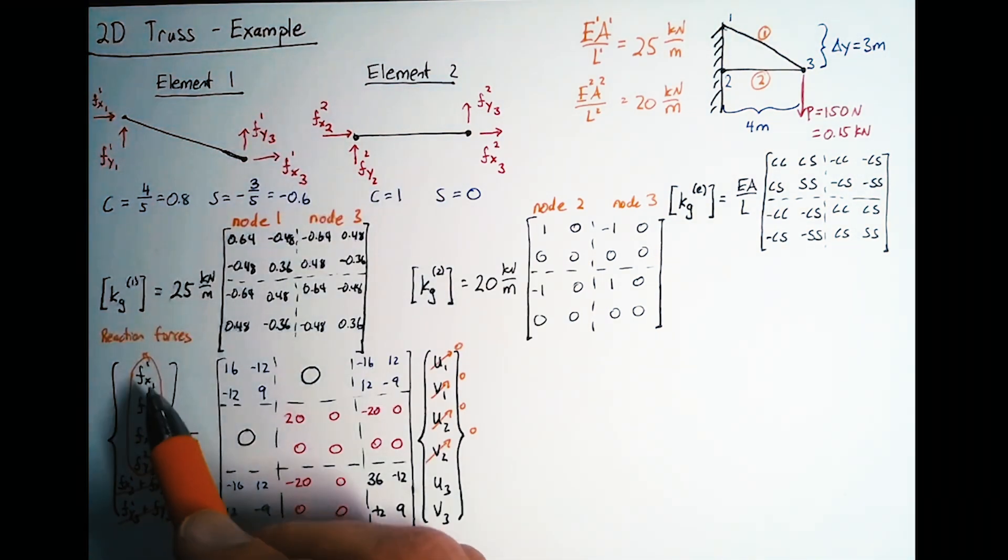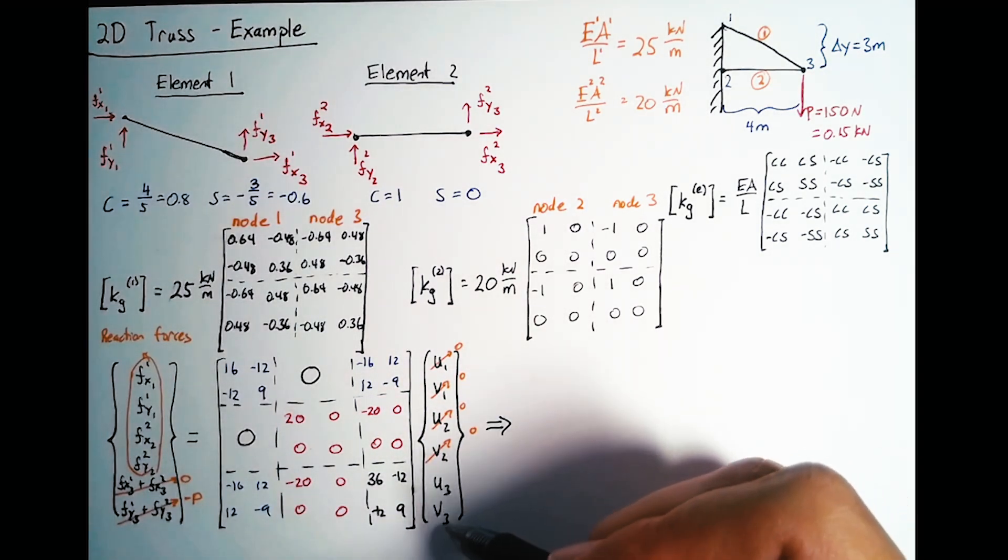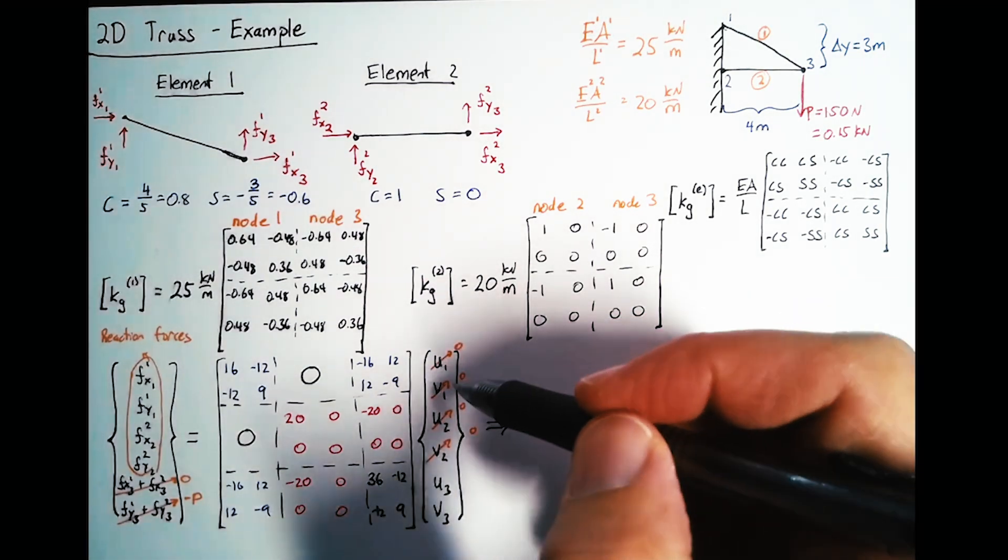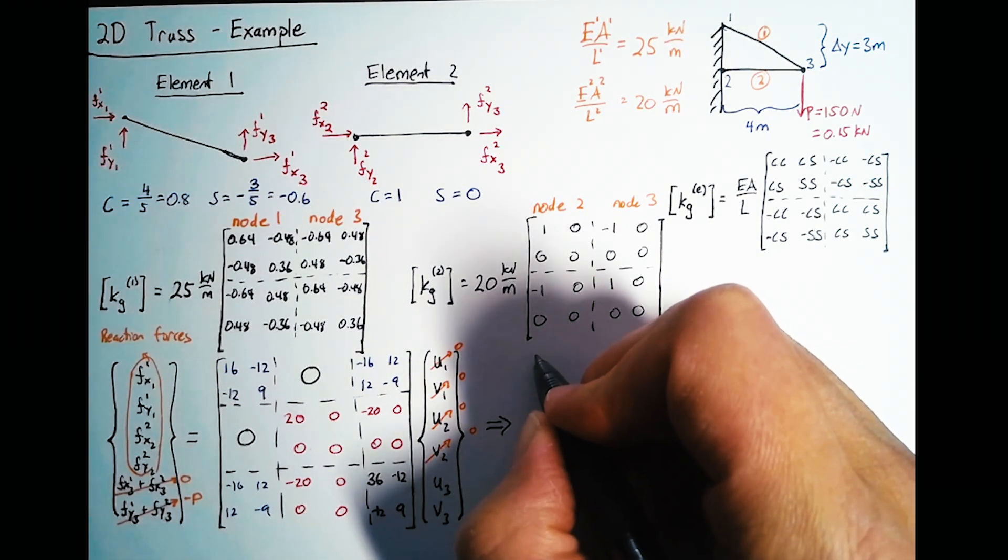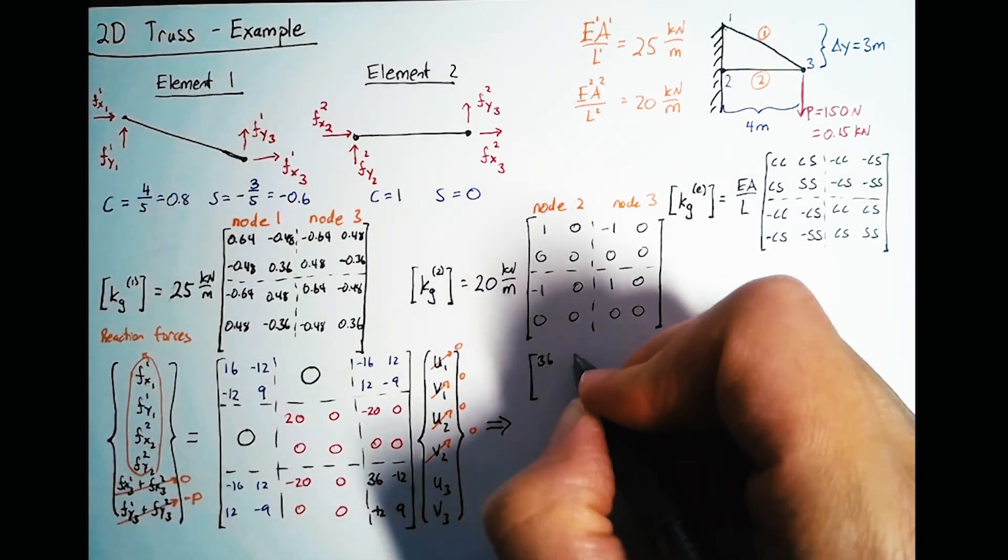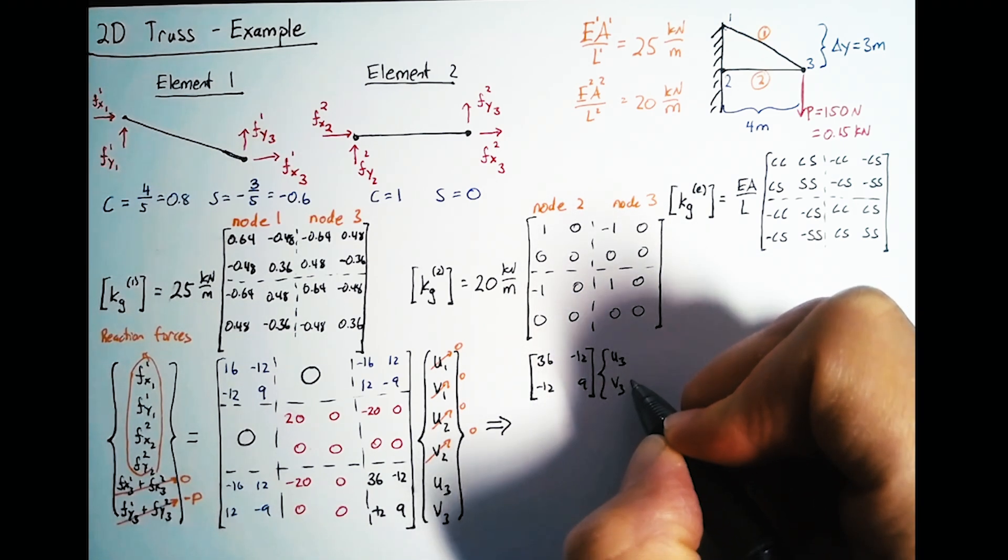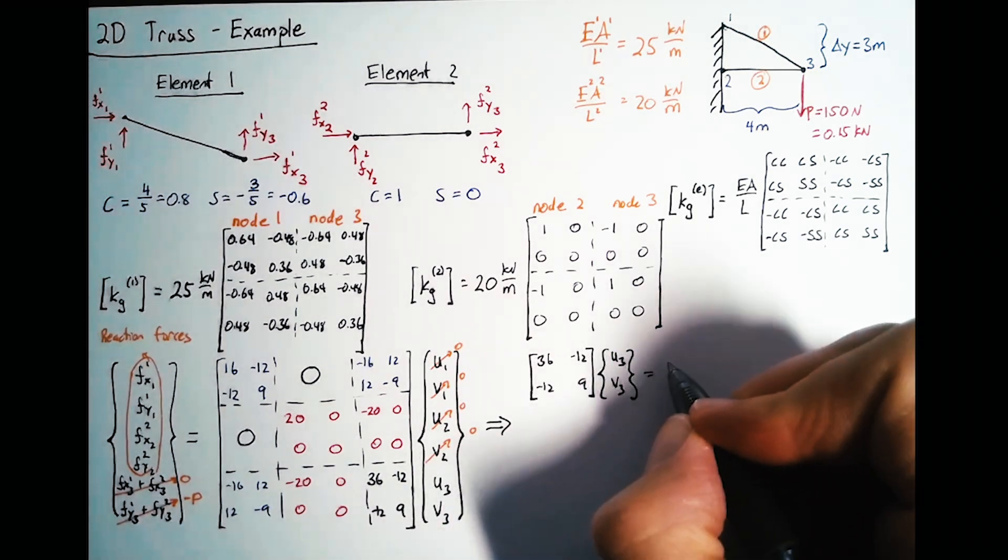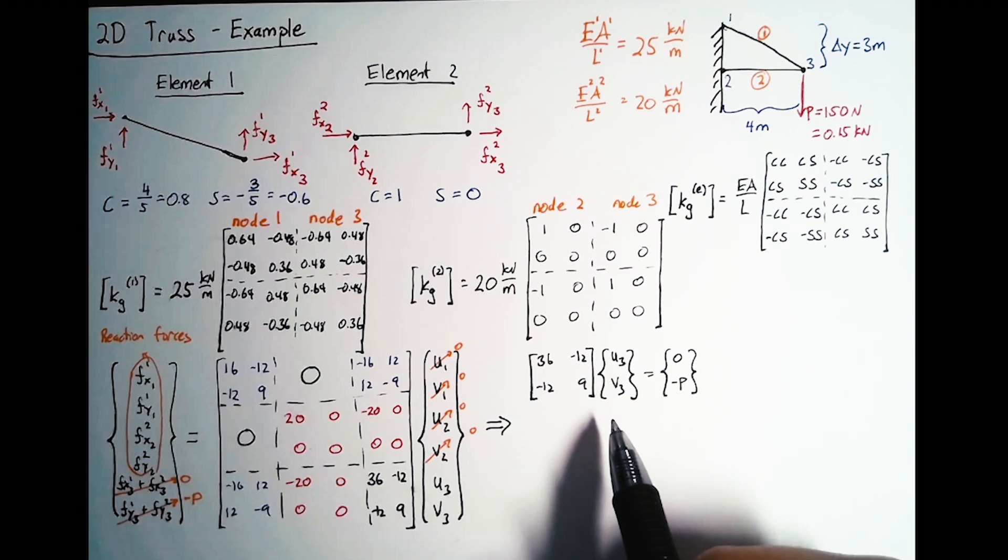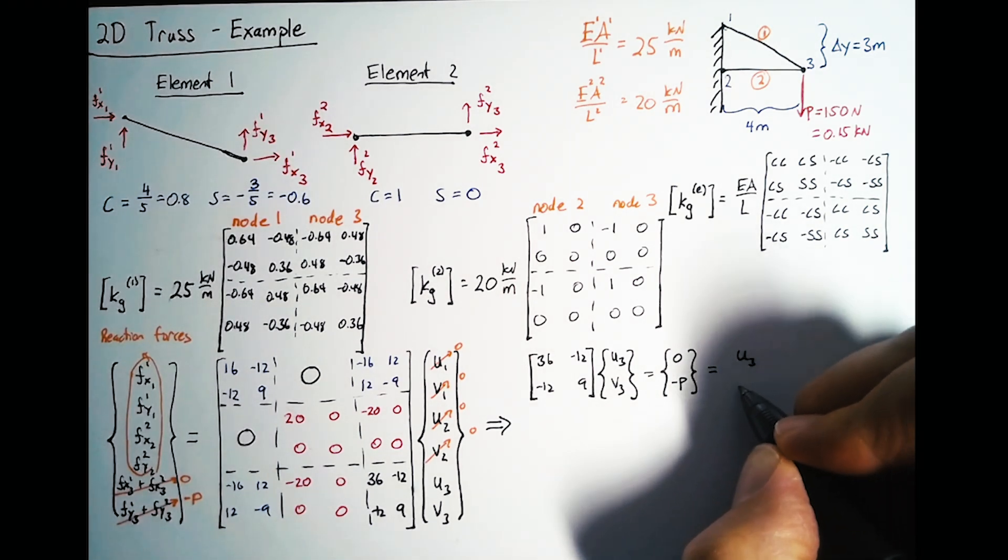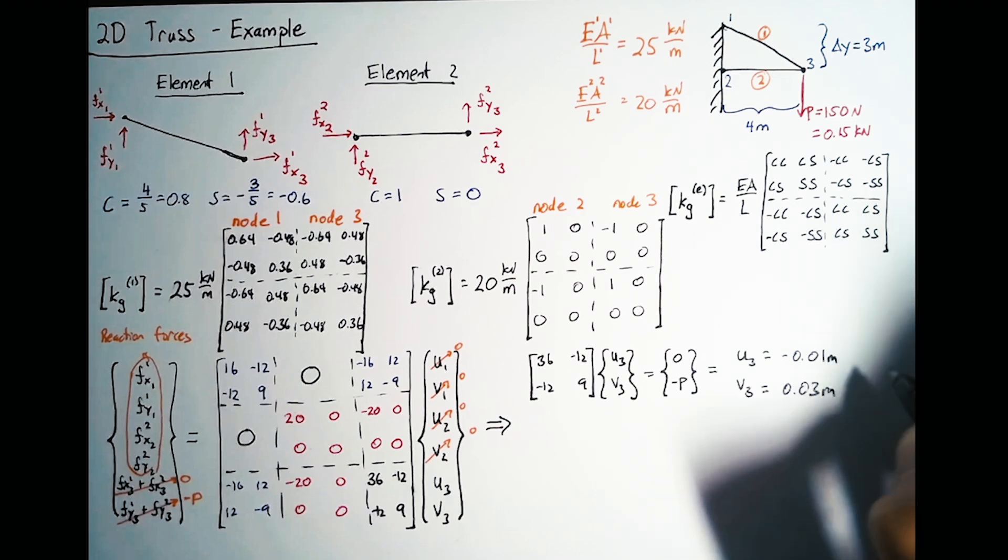Let's calculate U3 and V3 from this set of matrices. Since all of these displacements are 0, we can simplify this down to a much simpler set of equations that just includes this submatrix: 36, negative 12, negative 12, 9, multiplied by U3 and V3, equal to 0 and negative P. I plugged it into a matrix solver and got U3 equals negative 0.01 meters and V3 equals negative 0.03 meters.